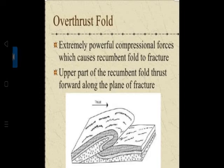Now, over thrust fold - this is another fold not in your textbook but it is useful information. Extremely powerful compression forces cause a recumbent fold to fracture. The upper part of the recumbent fold is thrust forward along the plane of fracture. We will learn about the thrust fault in later slides.